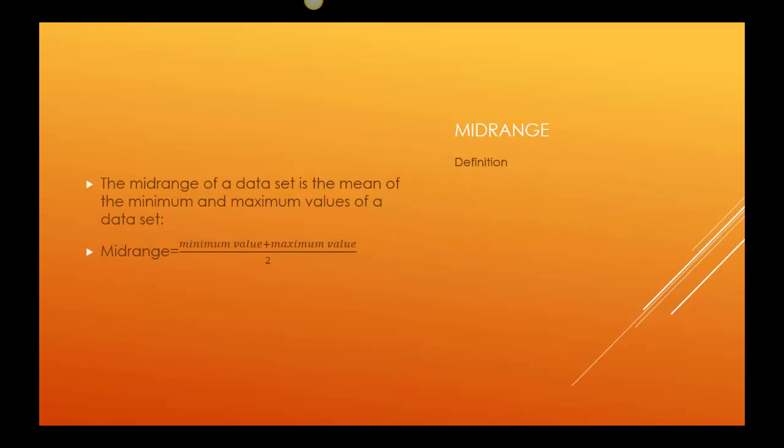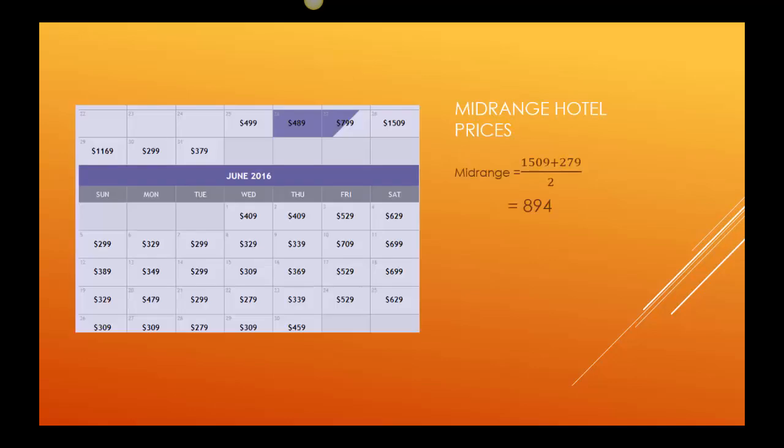The mid-range of the data set is the mean of the minimum and maximum values of the data set. So I have the minimum value, the maximum value, I divide by 2. So if we wanted to look at the mid-range, I would have the high, 1509, the low, 279, divided by 2, and I have 894. So there's one more explanation of an average for this set of data points.